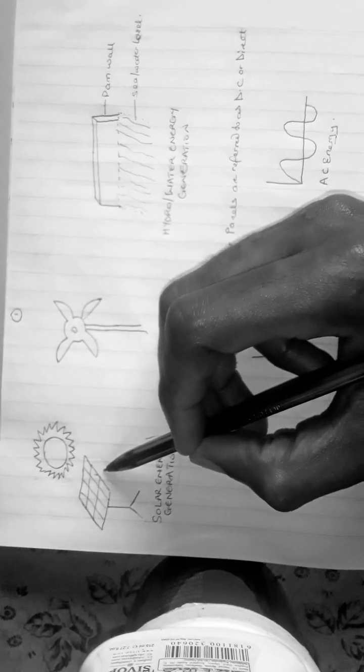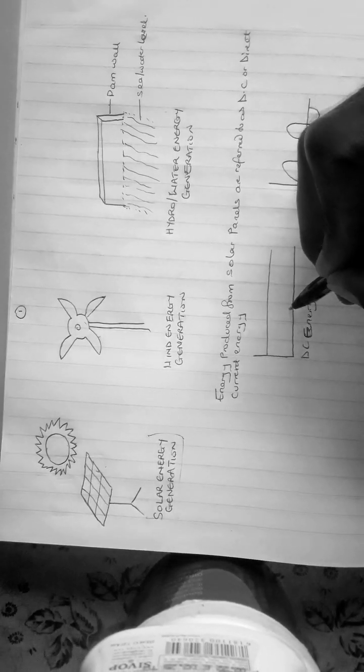The electricity, the current that is going to flow from this panel is what we refer to as DC energy, DC current, DC electricity.